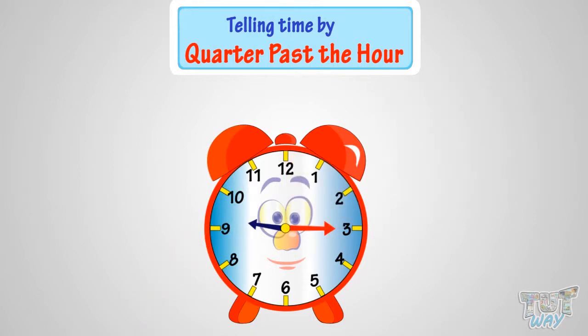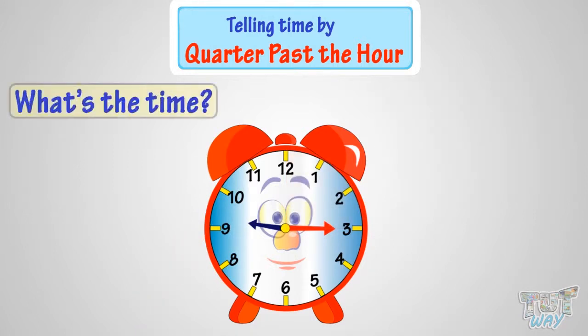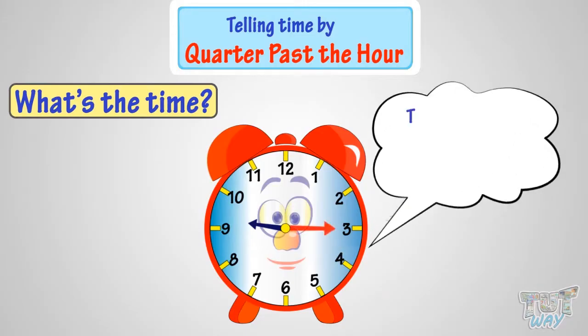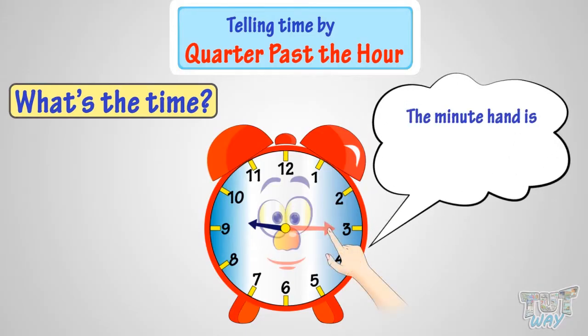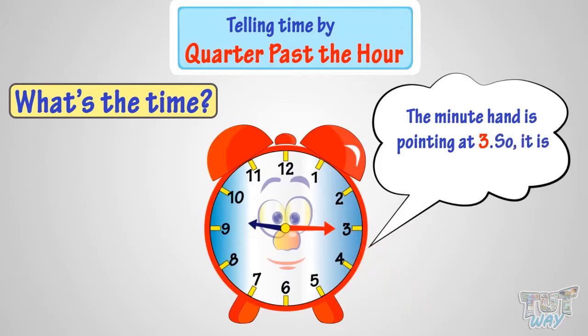Let's try to figure out what's the time in this analog clock. The minute hand is pointing at three, so it's quarter past the hour.